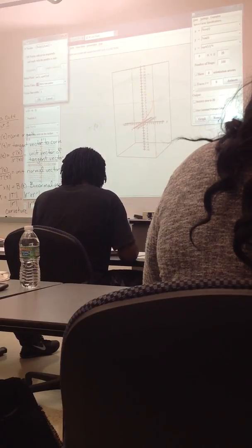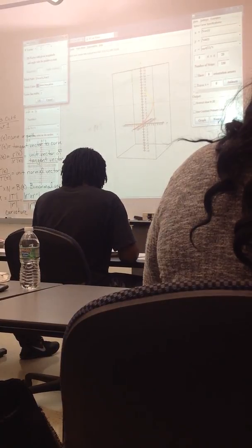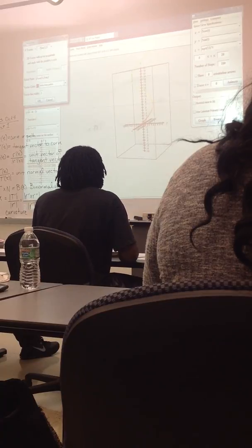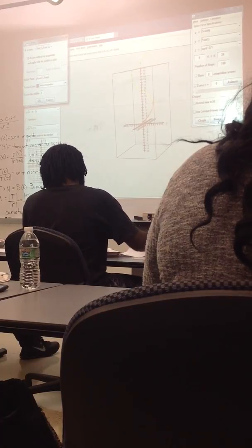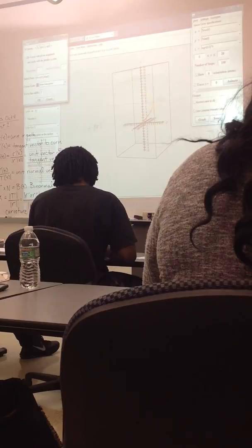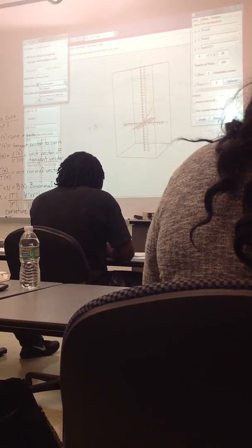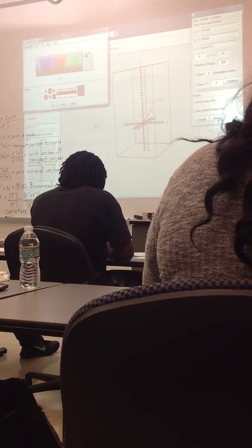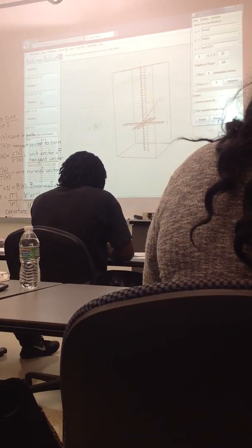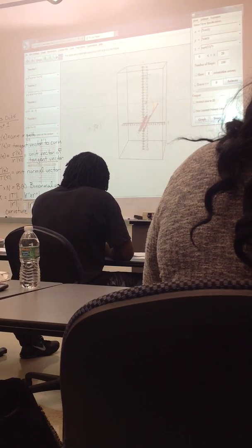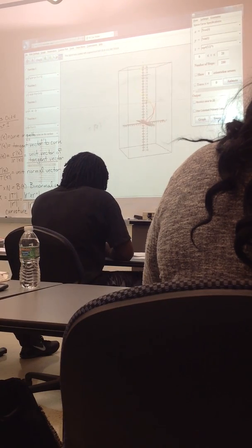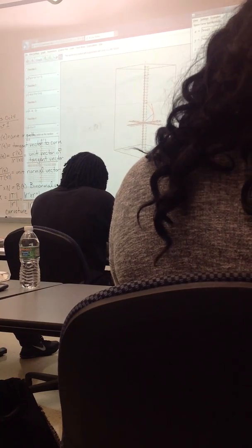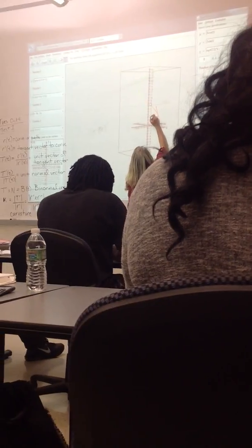And the tangent vector then is negative 5 sine of 1, positive 5 cosine of 1, square root of 11. And we will make the tangent vector red. So that's probably a good view right there. Okay, so here is r of t.